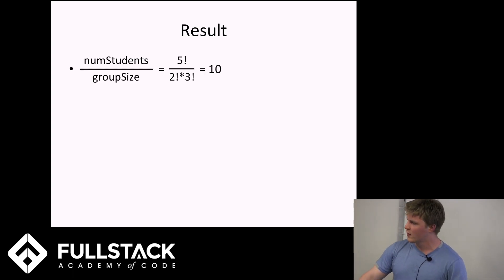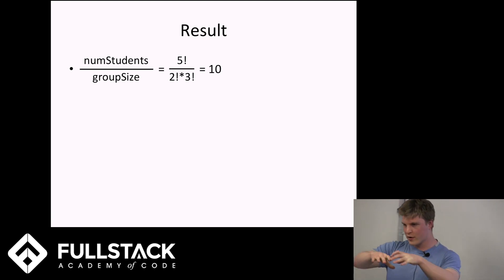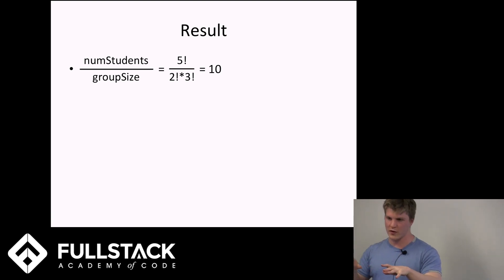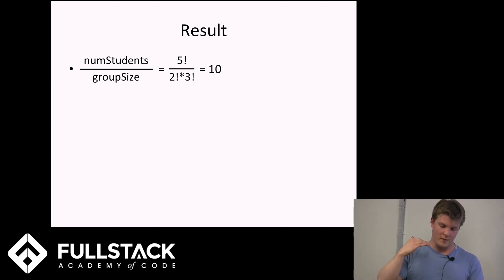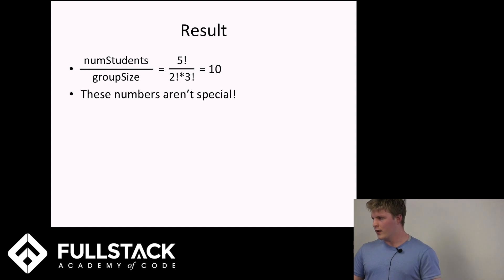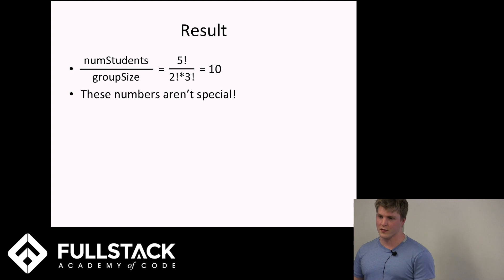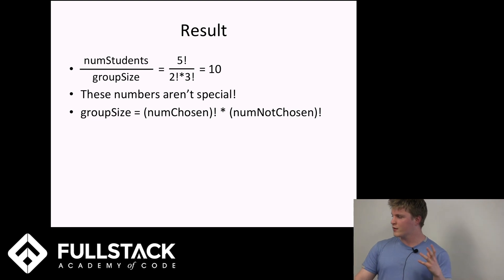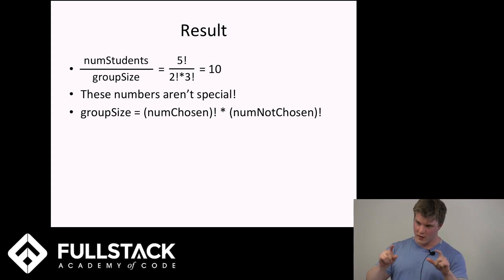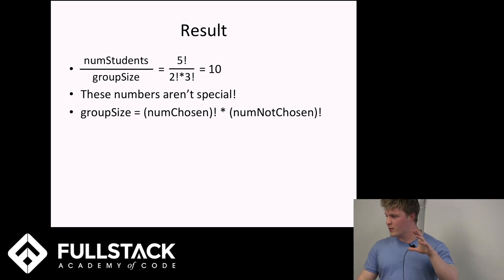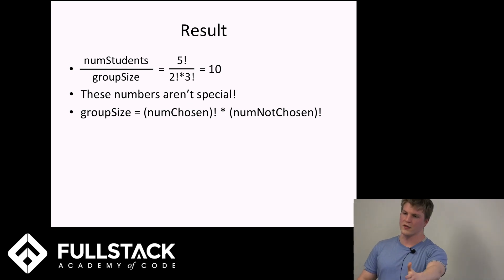So: 120 students, group size of 12, gives us 10 groups. Under the hood, we're talking about the number of ways to choose some things out of some other things. None of the logic is contingent on the specific numbers — the group size, or the number of paths to a given choice, is always going to be the number of chosen things factorial times the number of not-chosen things factorial.